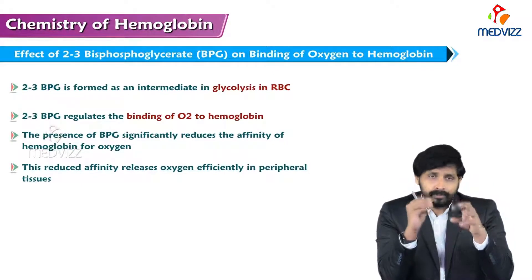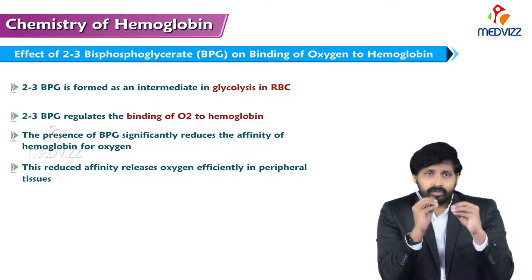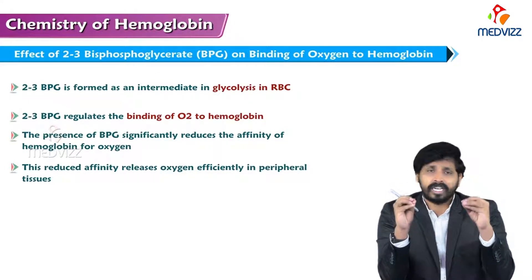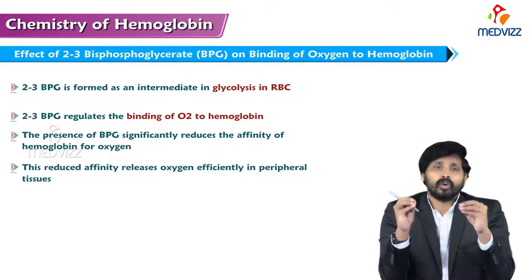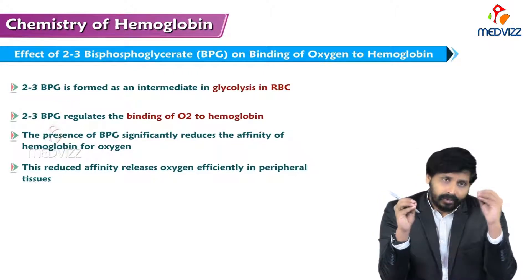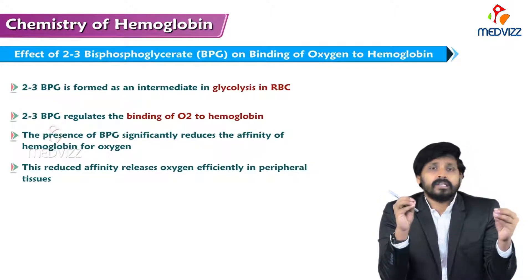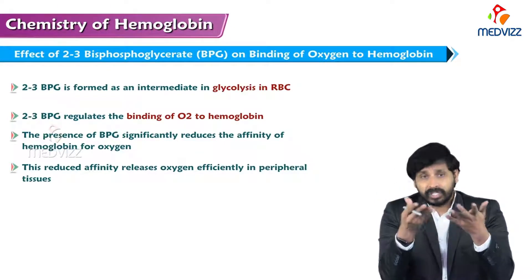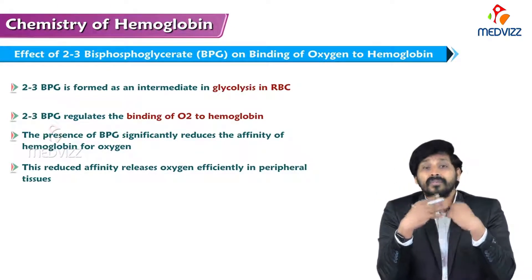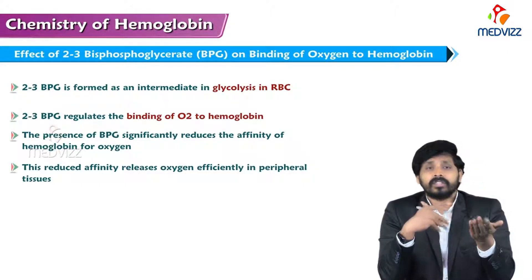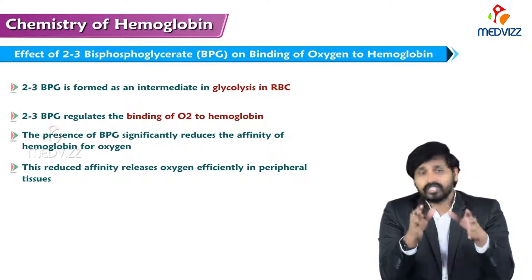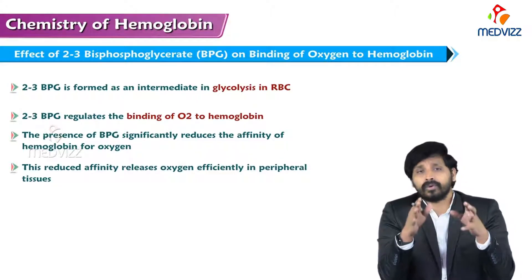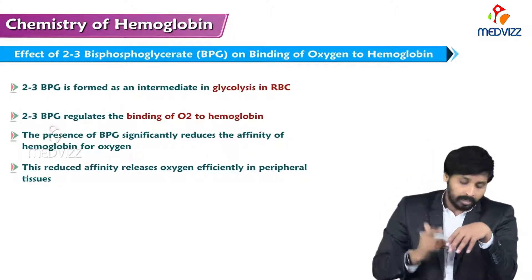When hemoglobin comes near 2,3-BPG — if oxygen and 2,3-BPG are present side by side — hemoglobin chooses to bind to 2,3-BPG rather than to oxygen. It shows stronger affinity towards 2,3-BPG rather than oxygen, and this is mainly useful in unloading of oxygen at tissue level.